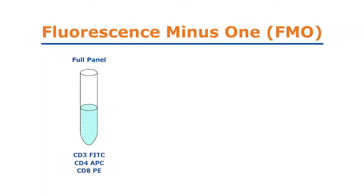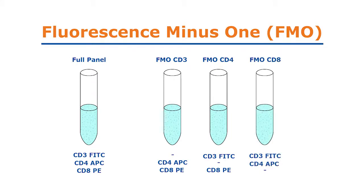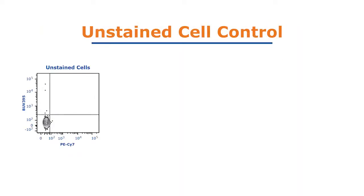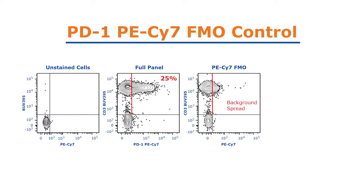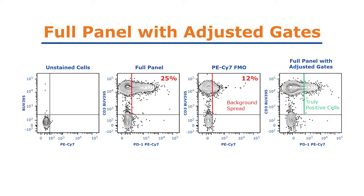In this example, we show the importance of fluorescence minus one controls, defined as a cocktail containing all the antibodies in the panel minus the one for which an appropriate gate needs to be determined. First, the unstained cell control was used to set the gates. The next plot showed the cells stained with the full panel. According to the gates set based on the unstained control, 25% of CD3 positive cells are also positive for PD1. However, the use of FMO control containing all the antibodies except PD1 reveals additional background introduced by other fluorochromes. This accounts for 12% of cells that were wrongly considered positive in the previous plot. When we adjust the gates based on the FMO control, we are able to more accurately measure truly positive CD3 positive PD1 positive cells at 13%.